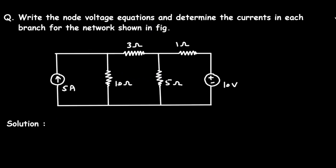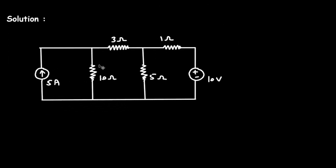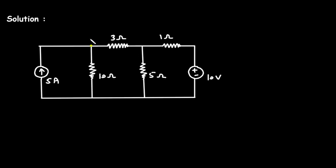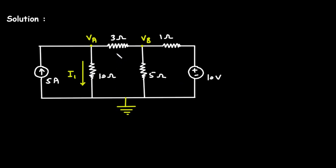For the solution, let's say this is node A with voltage VA and this is node B with voltage VB. This is a reference node. Now we have to assume all the currents towards this reference node — let's say this is current I1, this is current I2, this is I3, and this is I4.